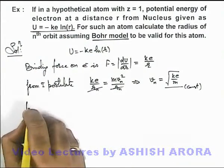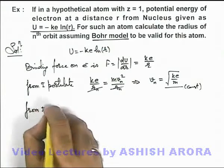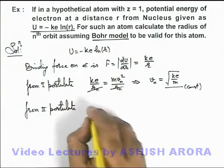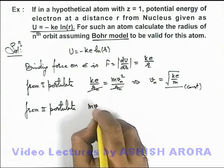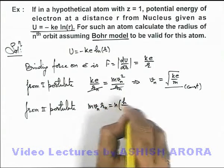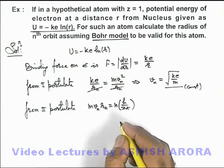Now, from the second postulate of the Bohr model, by angular momentum quantization, mvₙrₙ must equal n times h/(2π) if the Bohr model is valid.